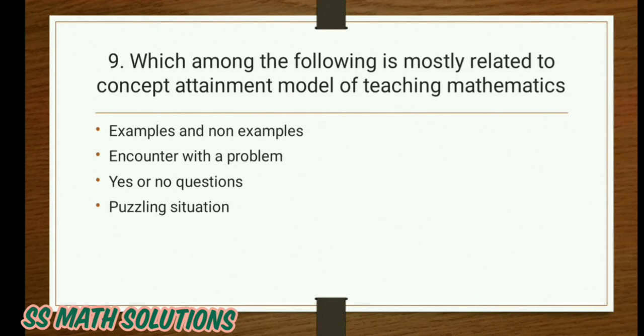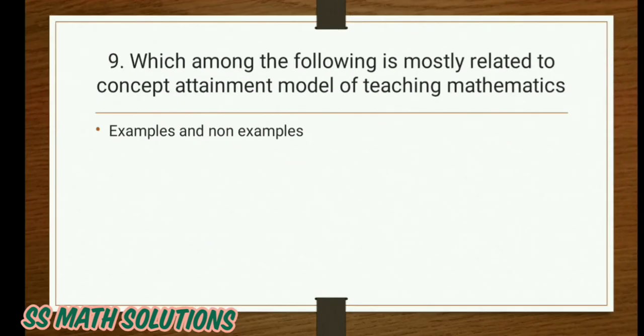Which among the following is mostly related to the concept attainment model of teaching mathematics? Examples and non-examples, encounter with a problem, yes or no questions, or puzzling situation. The answer is examples and non-examples — through examples and non-examples we deliver the concept attainment model.